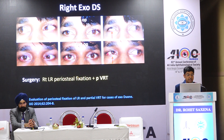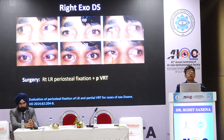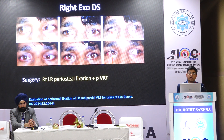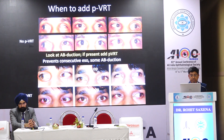In one patient we did a lateral rectus periosteal fixation to correct the angle of deviation and severe co-contraction — the result was very good. In another patient we did right lateral rectus periosteal fixation along with a vertical rectus transposition to prevent consecutive exotropia. If you do a complete lateral rectus suturing to the periosteum, you have completely eliminated its function, and about a third of patients go into exotropia. So if there is some lateral rectus function preoperatively and you do a periosteal fixation, also do a muscle transposition to prevent exotropia.